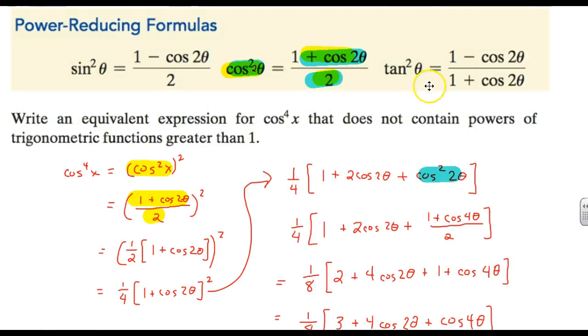So those are the power reducing formulas. Again, when you see a question like this, you start off with an even power, and you want to take that thing down to powers less than whatever you started with, then this is the way to go. This is the thing that's going to get you there. Notice they're all in terms of cosines.